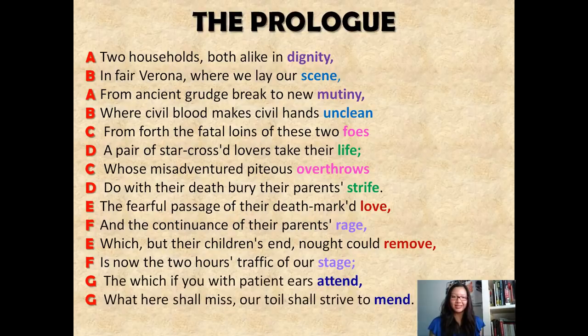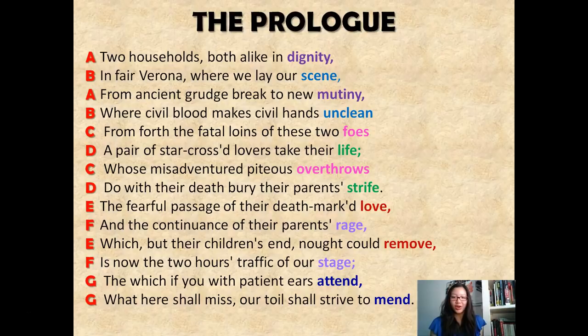The first quatrain allows you to see the alternating rhyme scheme: 'Two households, both alike in dignity, / In fair Verona, where we lay our scene, / From ancient grudge break to new mutiny, / Where civil blood makes civil hands unclean.' Notice how the words 'dignity,' 'scene,' 'mutiny,' and 'unclean' create an alternating rhyme scheme.